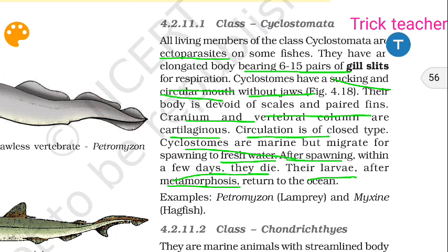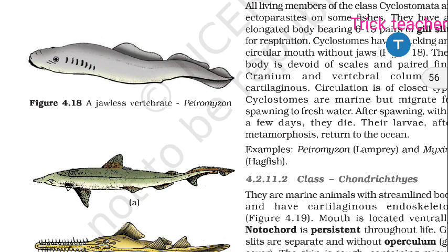This is an example of Cyclostomata. The example is Petromyzon, commonly known as lamprey, and Myxine, commonly known as hagfish. These are two examples. Petromyzon and Myxine are the board exam examples for Cyclostomata. Next class we will continue further.